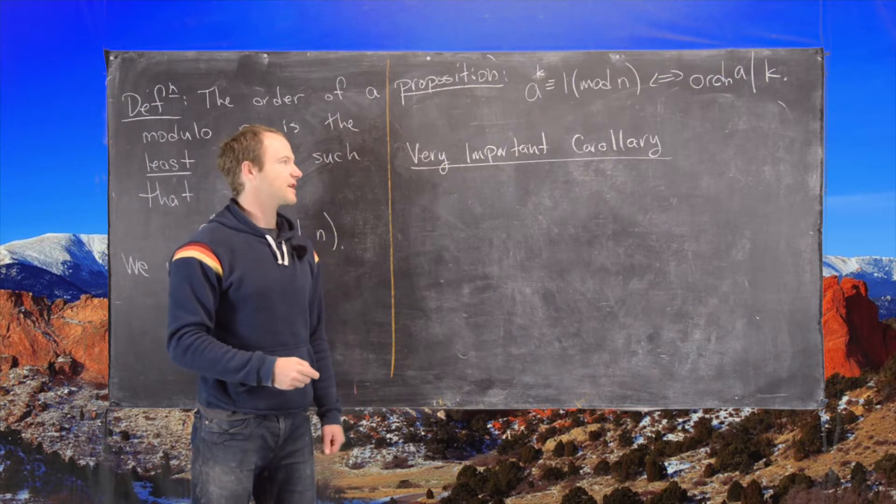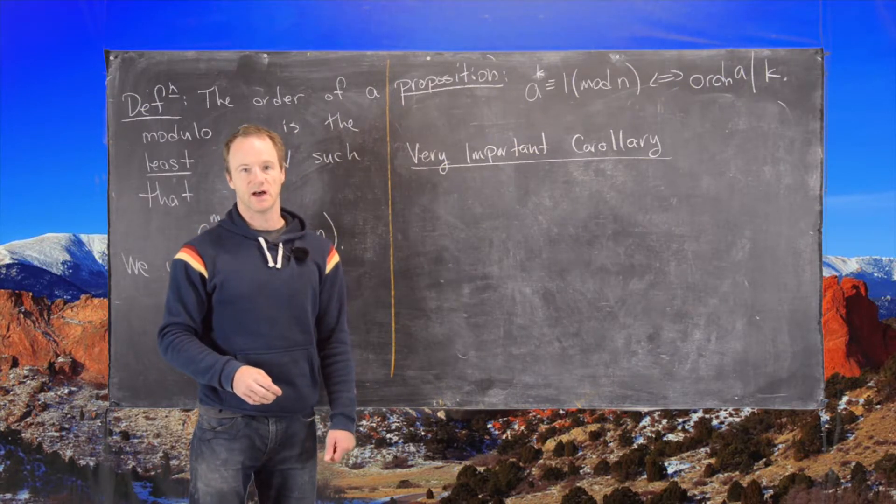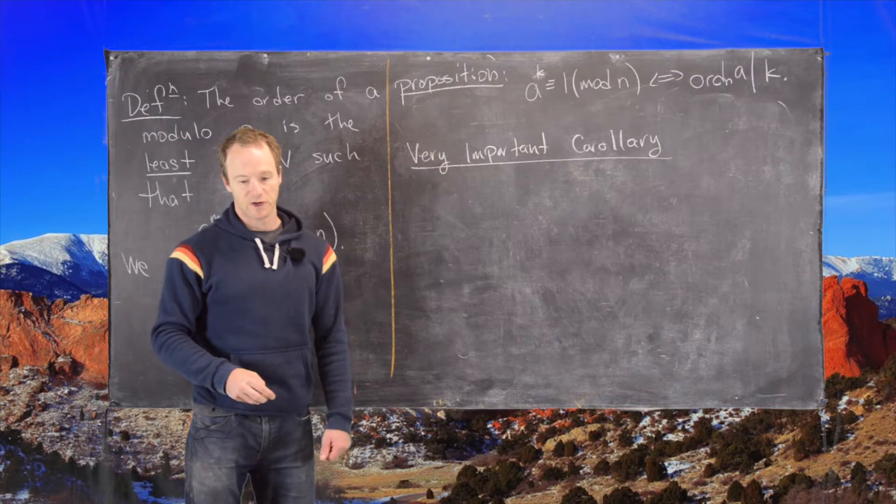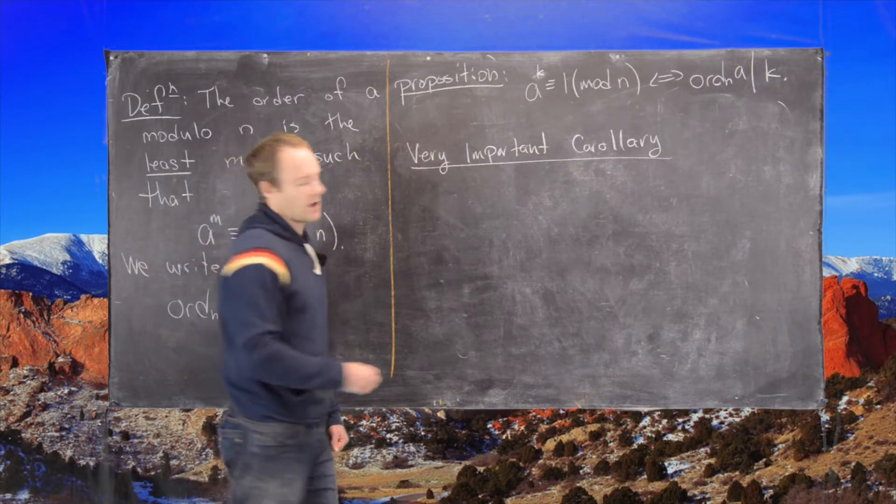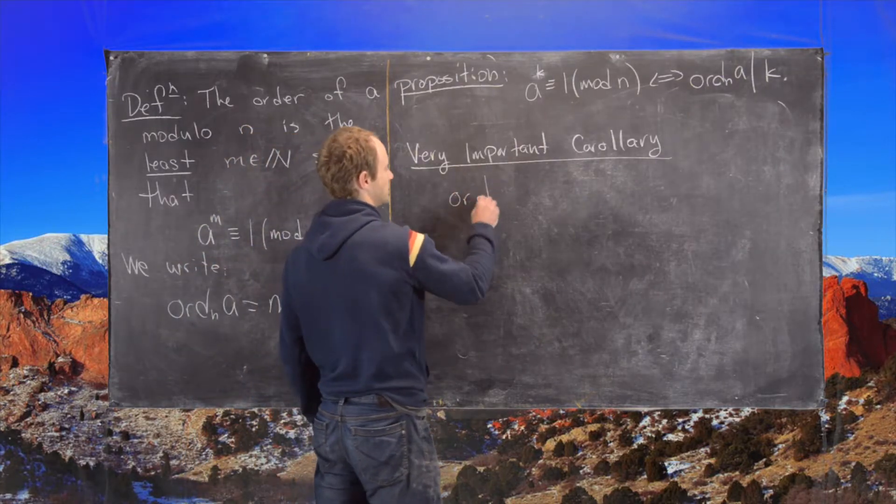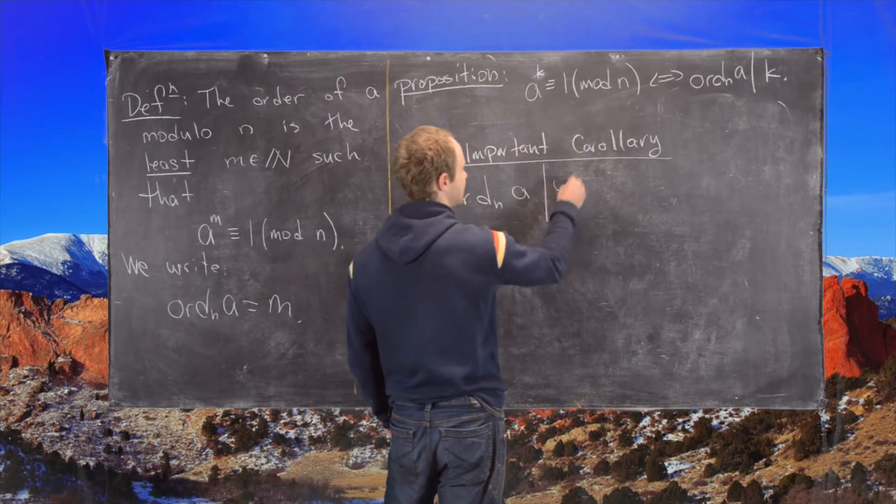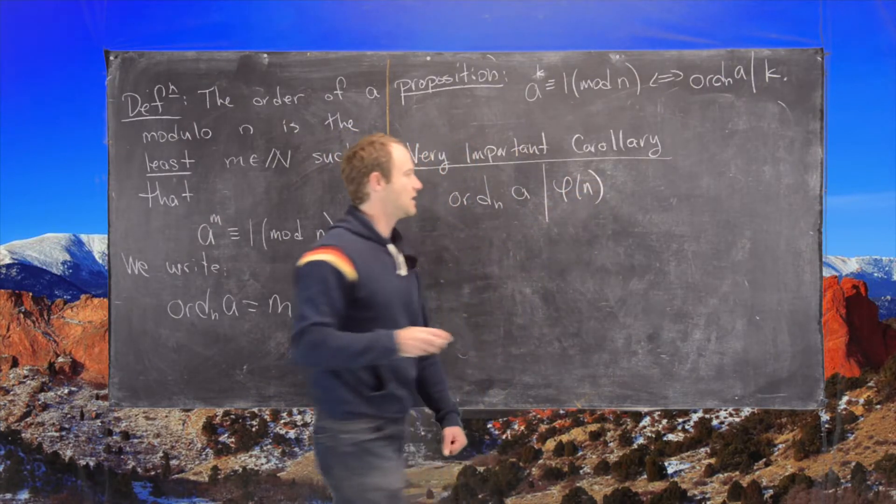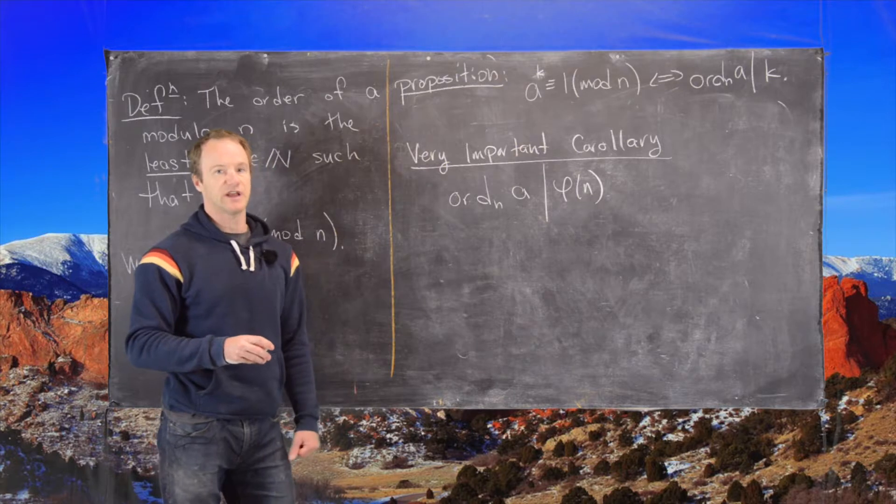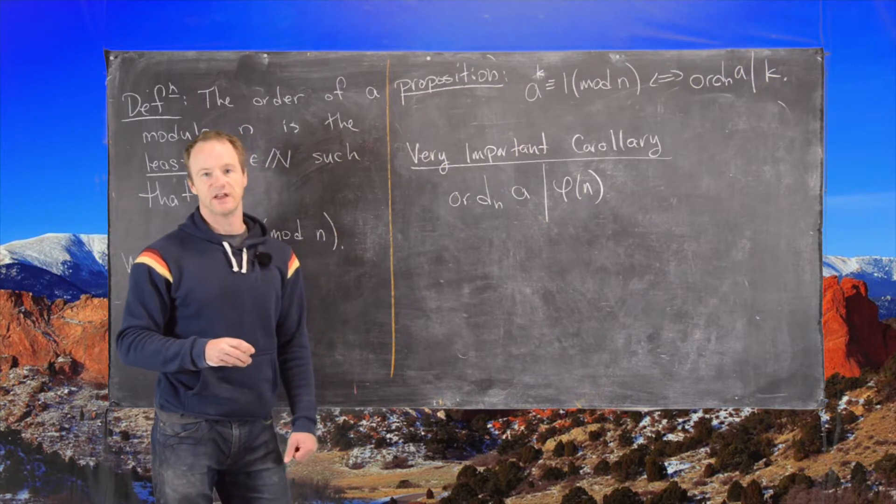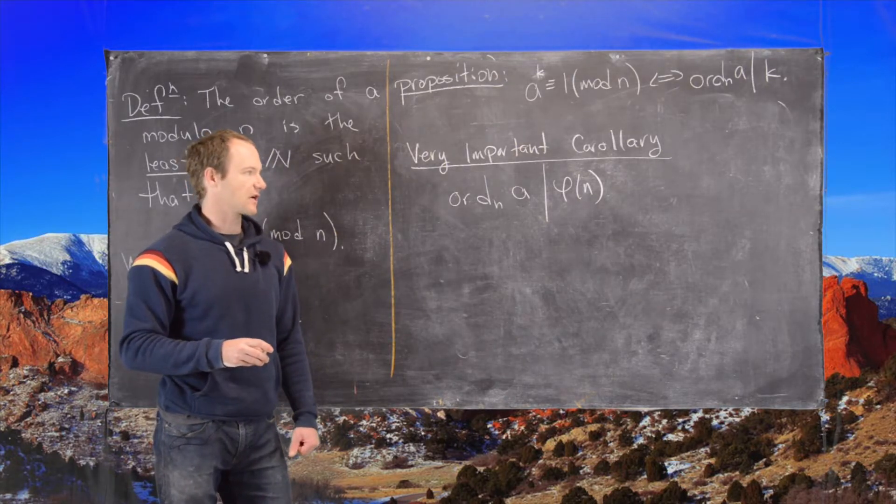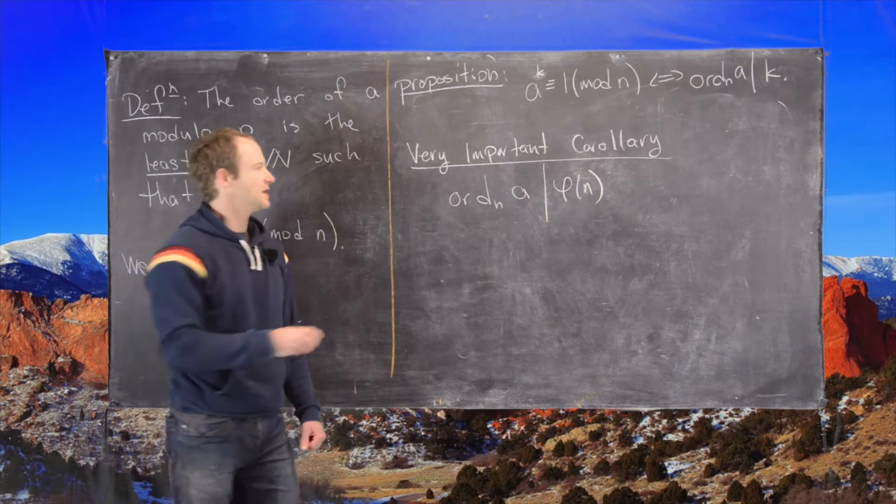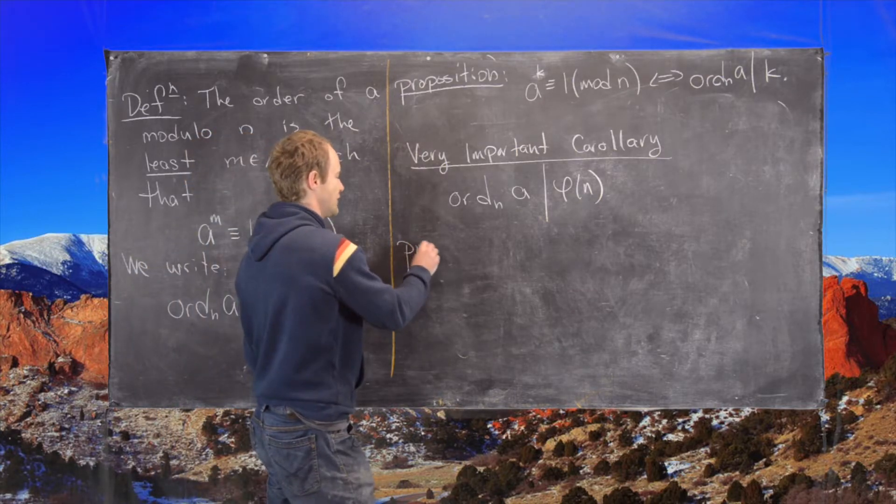Okay. So here's a very important corollary to this proposition, which is as follows. The order modulo n of a divides phi of n, where that's Euler's Totient function. In other words, the number of positive integers smaller than n that are relatively prime to n. So let's sketch a proof of this real quick.